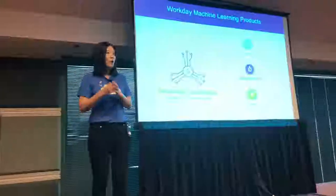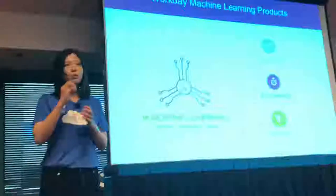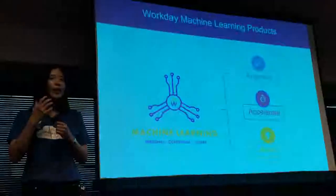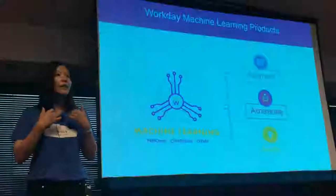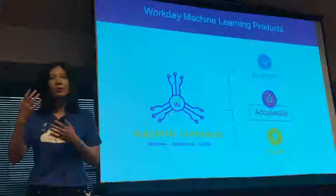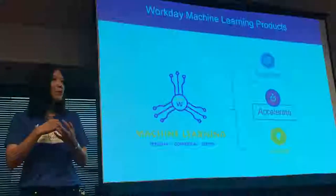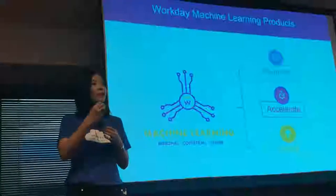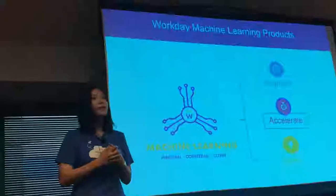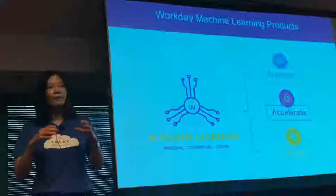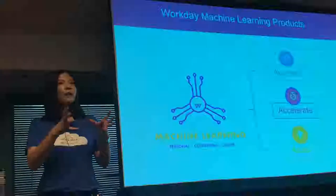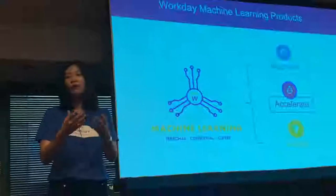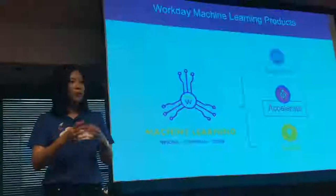When we want to do certain tasks, we can use a system to understand what our intentions are. They can either return the information we're looking for, or they can actually conduct the task for us. For example, Workday has a small chatbot called the Assistant that can submit your PTO for you — you simply say something like 'hey, submit PTO for me from the 1st to the 1st.'